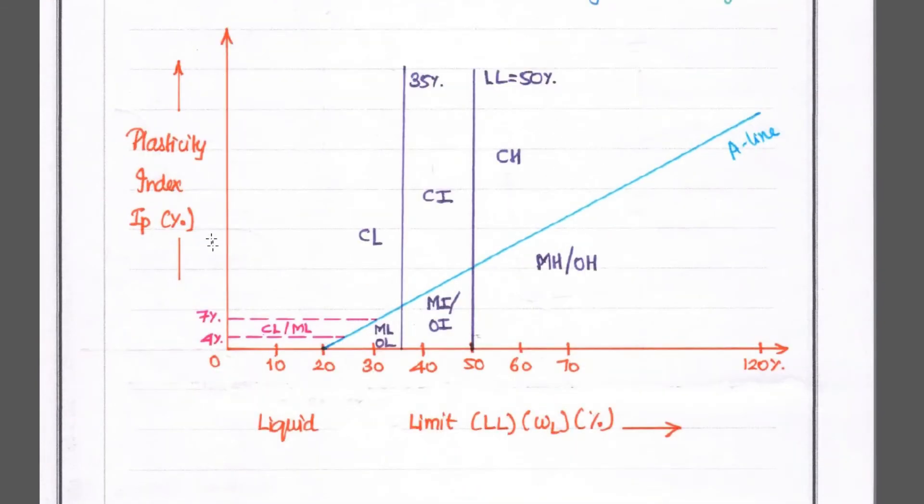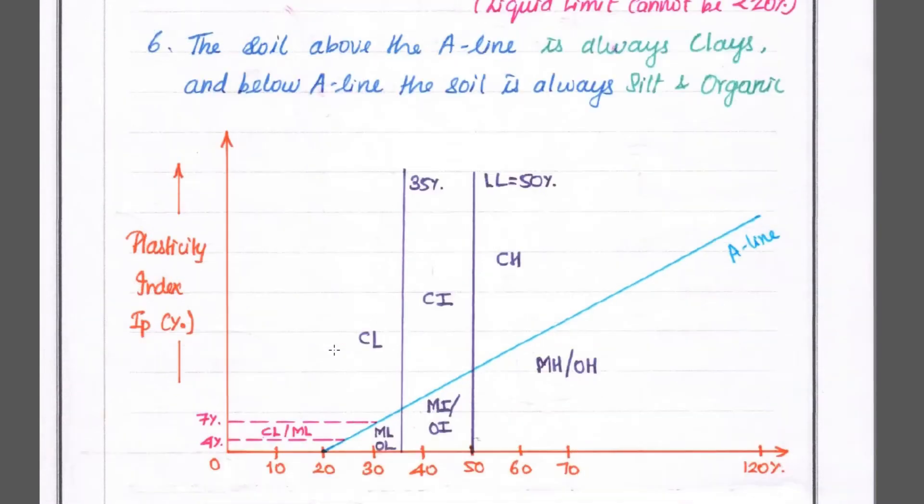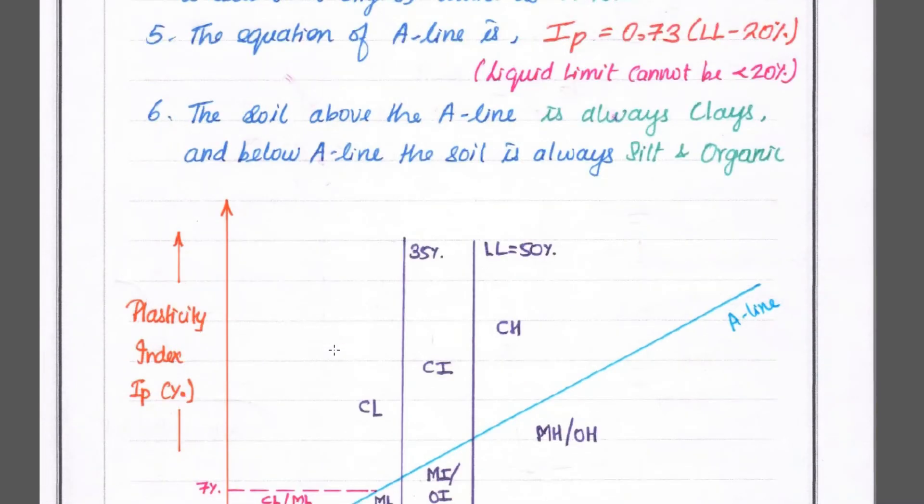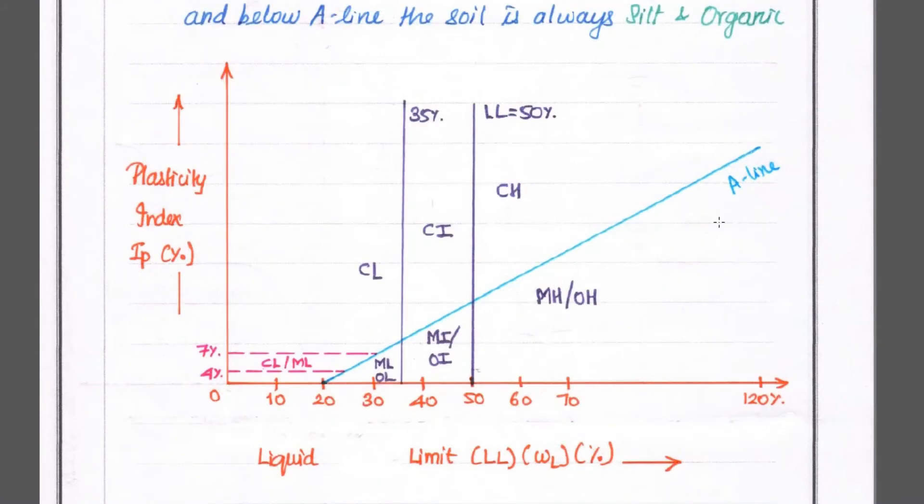This is the plasticity chart. We have on x-axis liquid limit (LL or WL) in percentage, and on y-axis we have plasticity index IP value. The A-line is derived based on IP value: 0.73 into liquid limit minus 20.